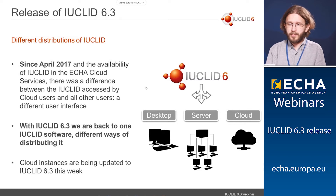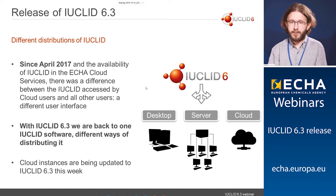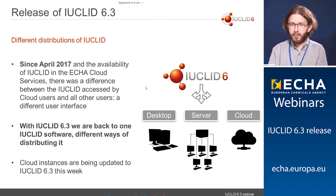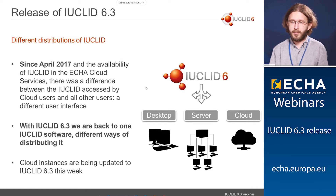Before continuing with the content of this Euclid 6.3 release, I wanted to give some information about the different ways we distribute Euclid. There was some confusion since we went live with the ECHA cloud services in April 2017, where Euclid can also be accessed. With this Euclid 6.3 release, we are back to one Euclid software — the same user interface is available for all Euclid users, whether they are using the cloud services, the desktop version, or the server version. The desktop and server versions can be downloaded from the Euclid 6 website and installed on your computer or server, then made available to all users in your organization.